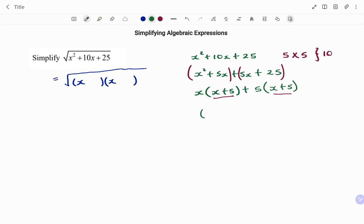So factoring out x plus 5, what I have left is x plus 5. Therefore, my factor becomes x plus 5 times x plus 5.